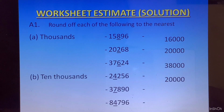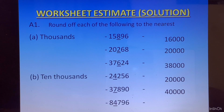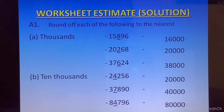Next: we have 7 at the thousands place. 7 is greater than 5, so we will add 1 to the digit at the ten-thousands place. 3 will become 4, and all the digits after it on the right will become 0. The answer is 40000. The last one: we have 4 at the thousands place. 4 is less than 5, so we will not change the digit at the ten-thousands place. All digits on the right of 8 will get converted to 0. The answer is 80000.